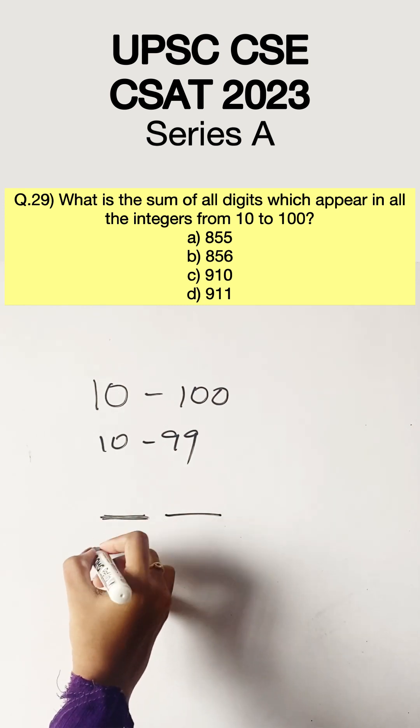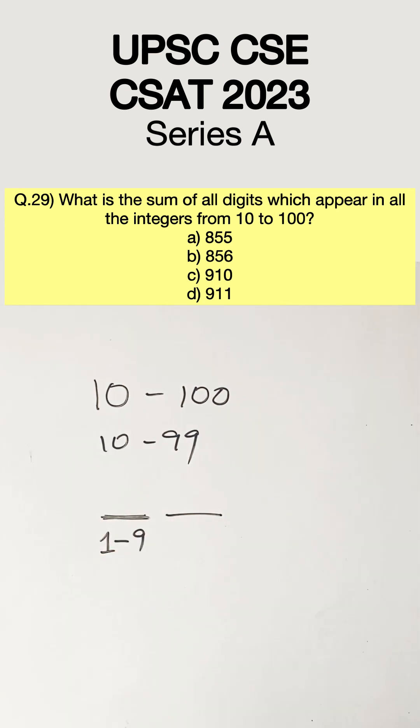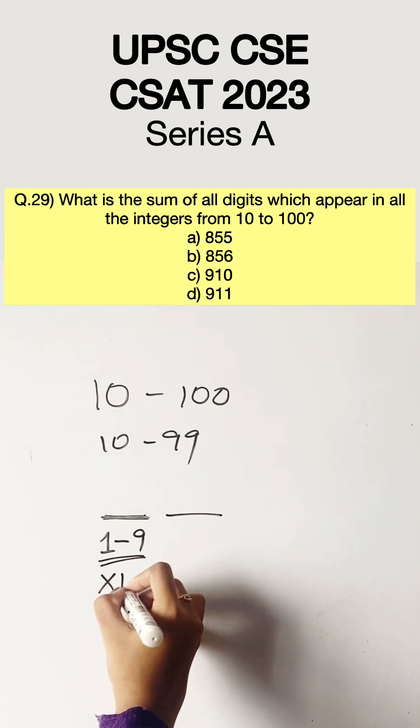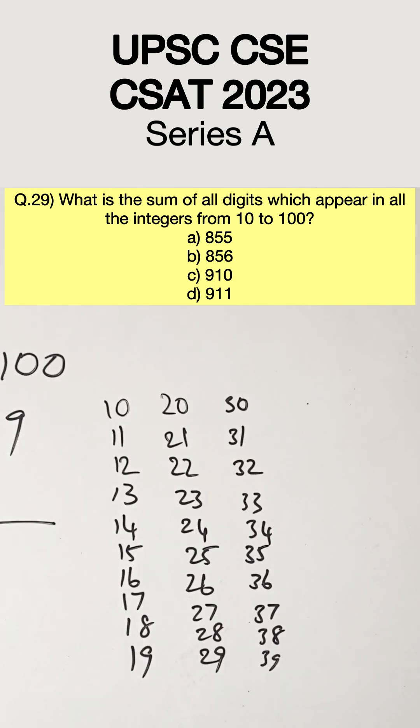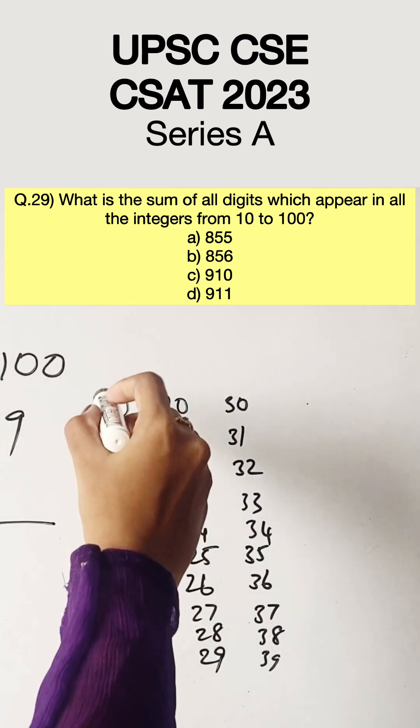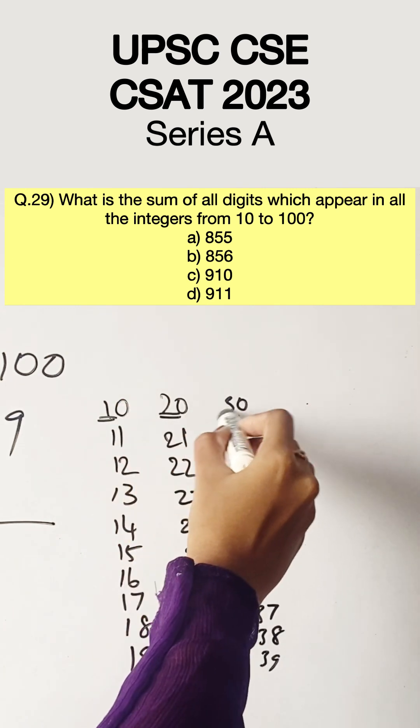We know that the first digit will range from 1 to 9 and each number will repeat itself for 10 times. You can see here that the first digits repeat themselves for 10 times.